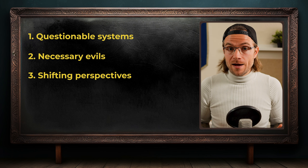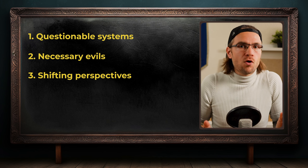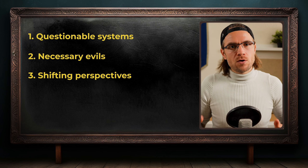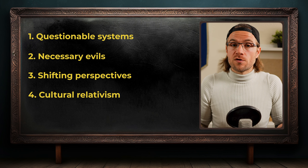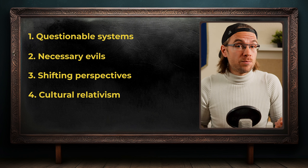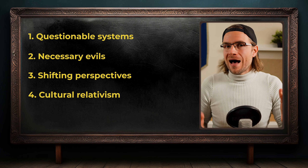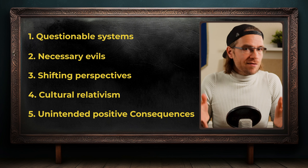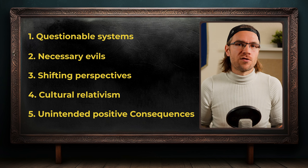Don't forget about shifting perspectives: as your trickster's true motives are revealed, it might cause readers to reevaluate earlier events in the story. Also think about cultural relativism: if your trickster comes from a different culture than your protagonist, use this to explore how morality can differ between societies. And lastly, remember unintended positive consequences: sometimes the trickster's selfish actions might accidentally bring about positive change, complicating the notion of villainy. For example, let's say Zahra's quest for power leads her to break an ancient magical seal — this releases not only dangerous energies, but also long-lost knowledge that could help the kingdom prosper. Now your characters and readers must grapple with whether the end justifies the means. Remember, the goal isn't to excuse villainous behavior, but to create a nuanced world where readers are encouraged to think critically about right and wrong.